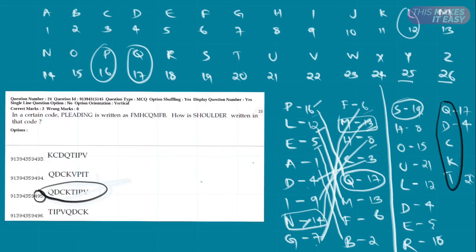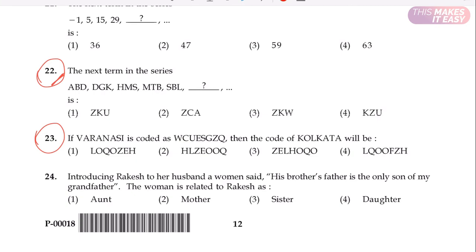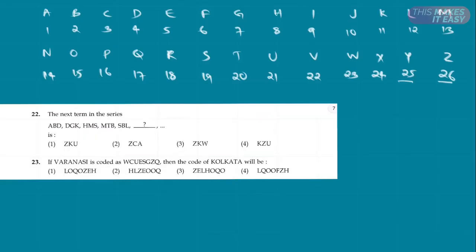Let's take another example. This is July 2018 question paper. In question 22, it is asked the next term: A, B, D, D, J, K, H, M, S, M, T, B, S, B, L. What is the next term? In question 23, if VARANASI is coded as this, then the code of KOLKATA will be? Four options have been given. Let's look at the question. So let's start with the first question.